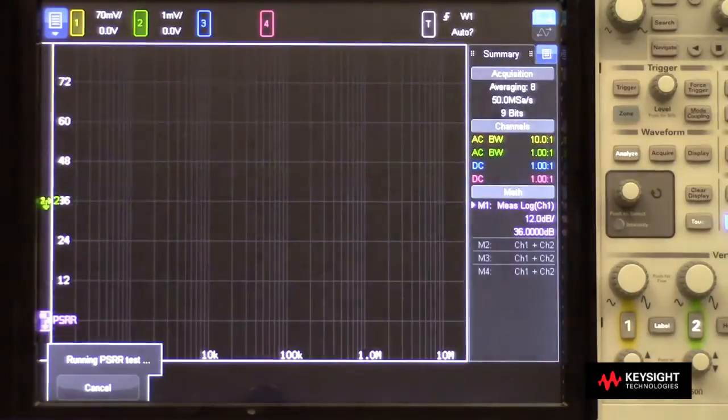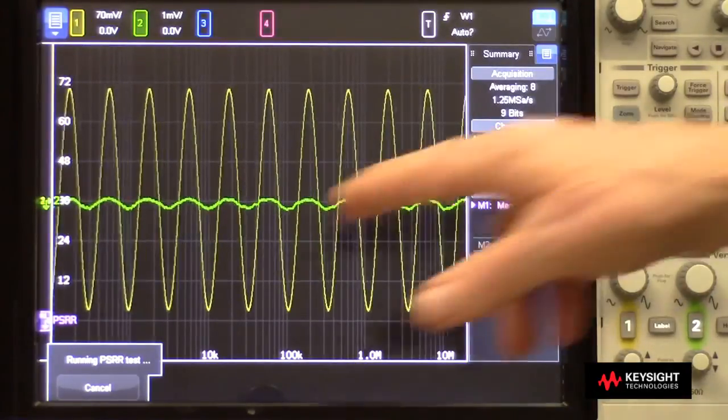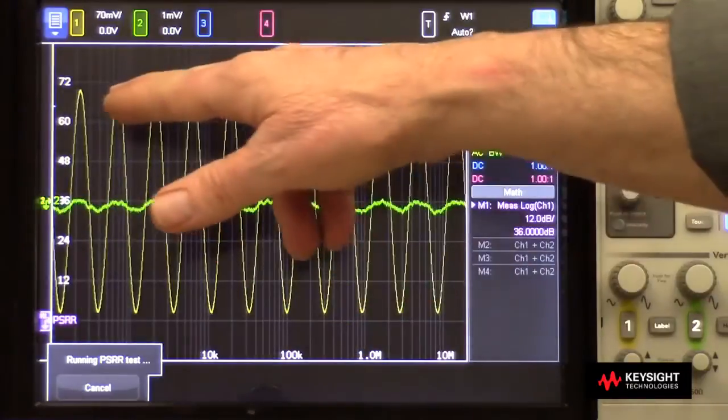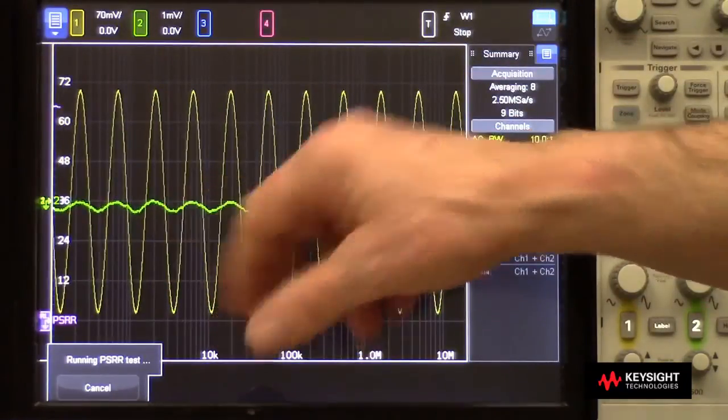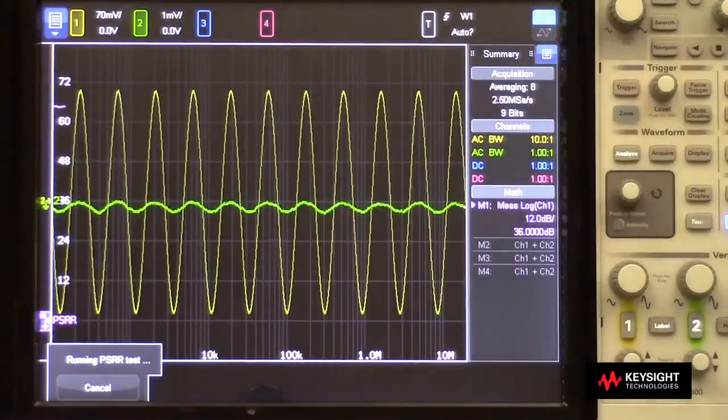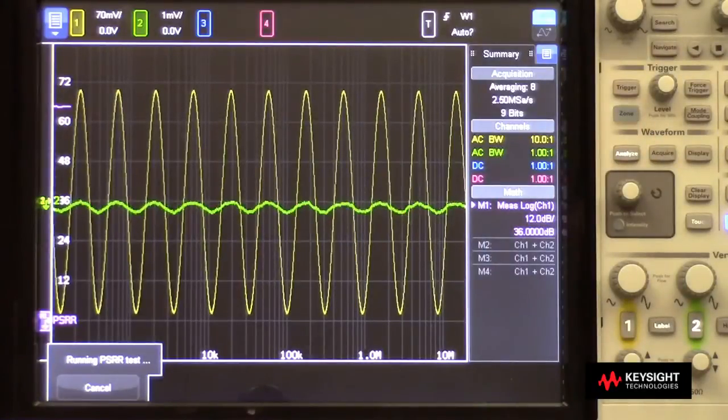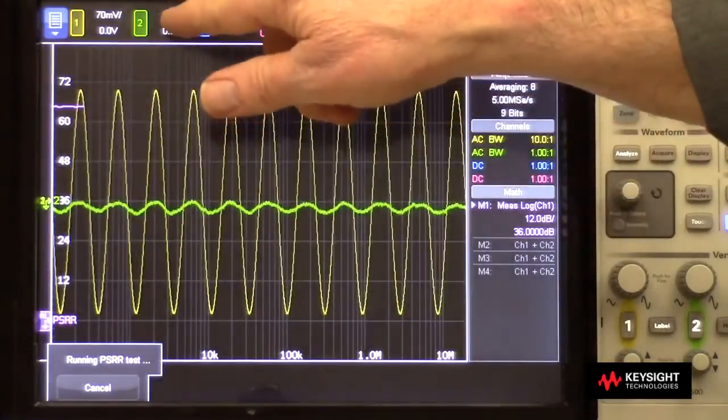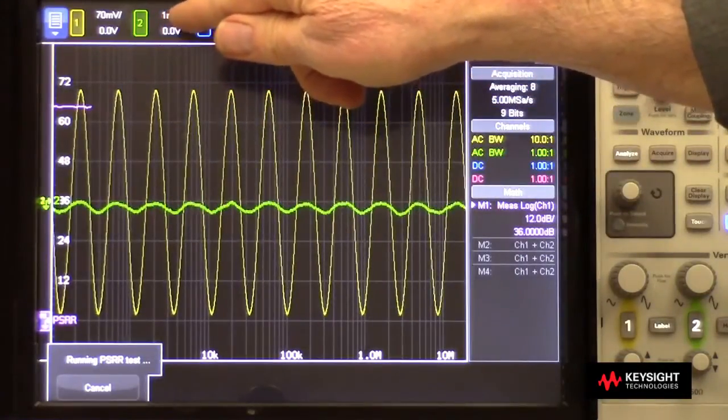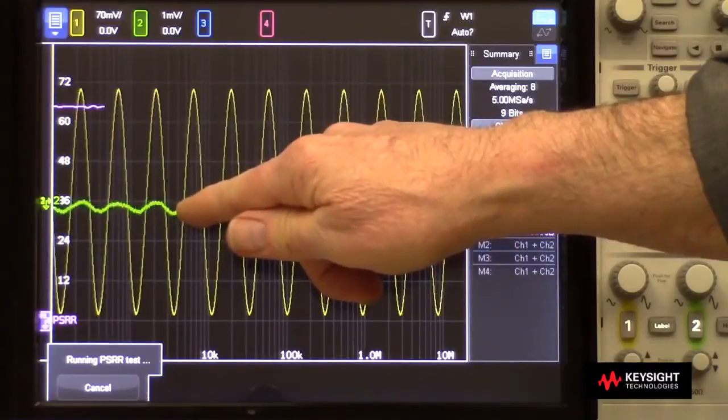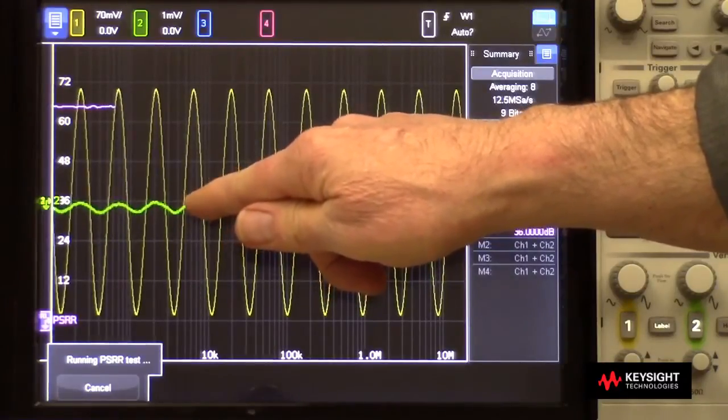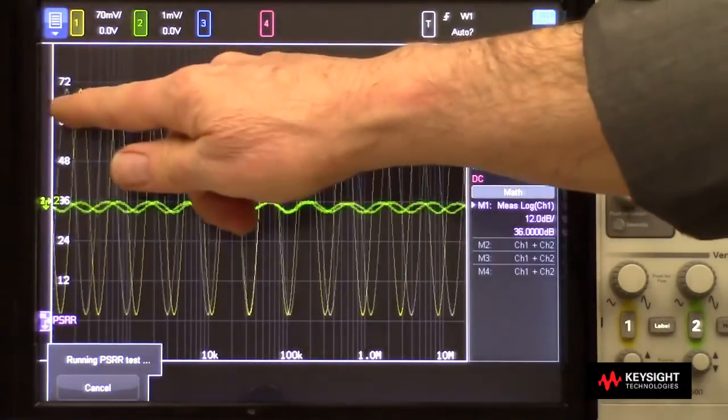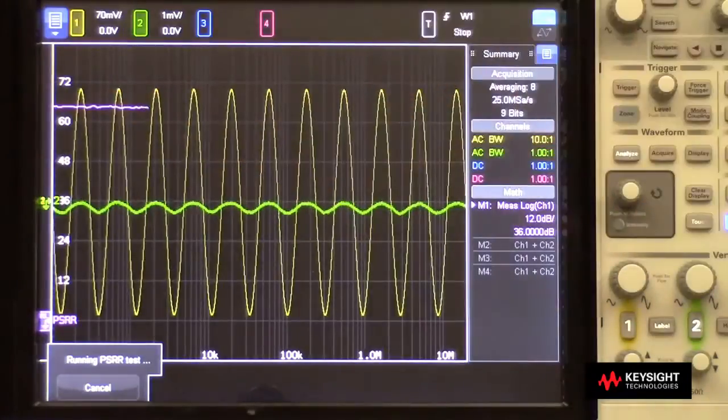The scope will automatically AC couple both the input and the output. The input is the yellow waveform. The output is the green waveform. It's also doing averaging to dig the very low level output signal out of the noise floor. And you can see we're sitting here at one millivolt per division. And we're less than half a millivolt peak to peak. Maybe we started around a quarter of a millivolt.